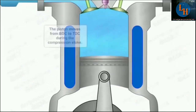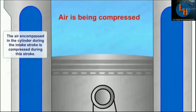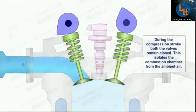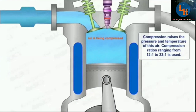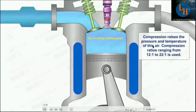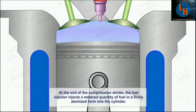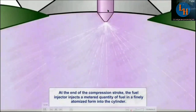The second stroke is the compression stroke. Both valves are in closed condition. The piston moves from bottom dead center to top dead center, compressing the air. Due to compression, temperature rises significantly. The compression ratio in a diesel engine is higher than in a petrol engine — petrol is 6:1 to 10:1, while diesel is 12:1 to 20:1, typically around 20:1. At the end of compression, fuel is injected from the injector, and then the power stroke begins.